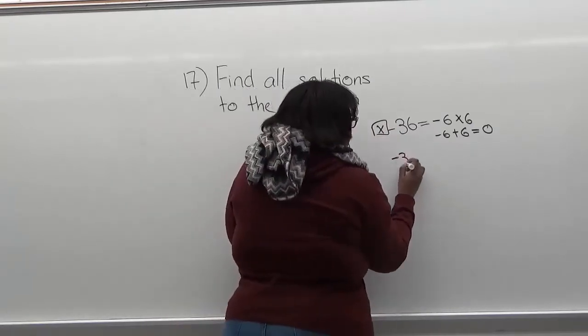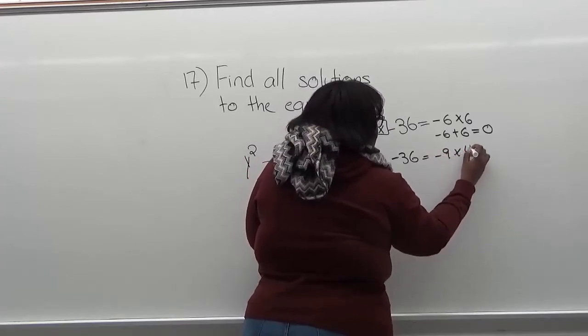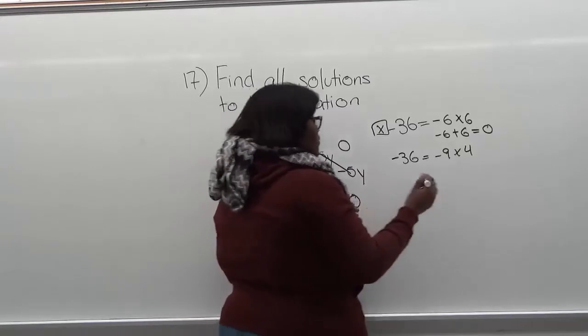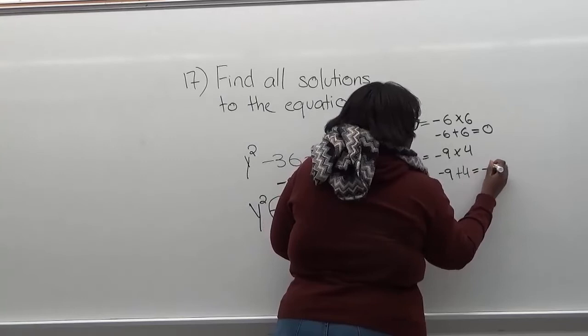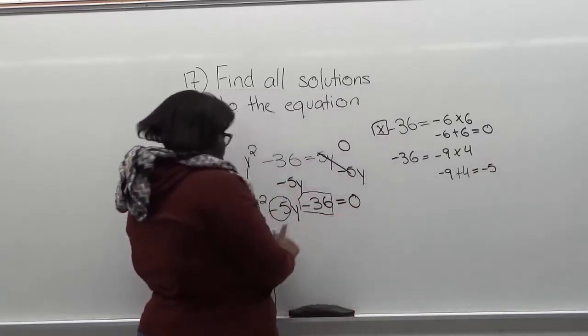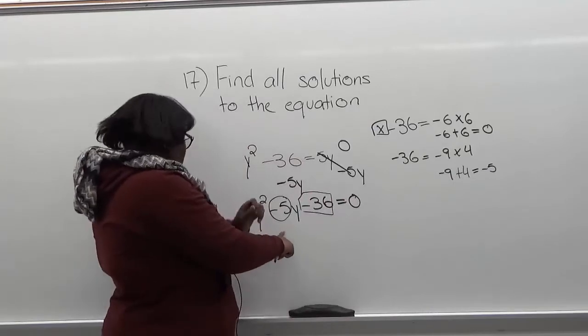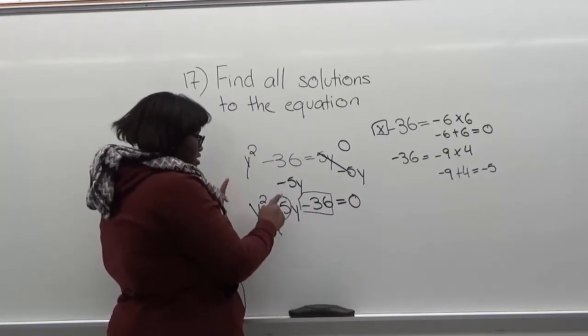Let's go with negative 9 times 4. Negative 9 times 4 gives you negative 36. Now, if you add negative 9 plus 4, that gives you negative 5. As you can see, these two numbers would be the factor numbers for this expression.